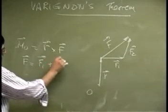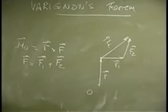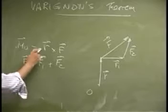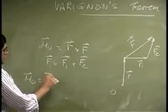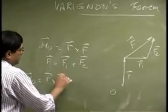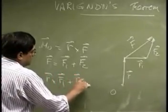If I put this back here, I could say that MO is R cross F1 plus R cross F2.